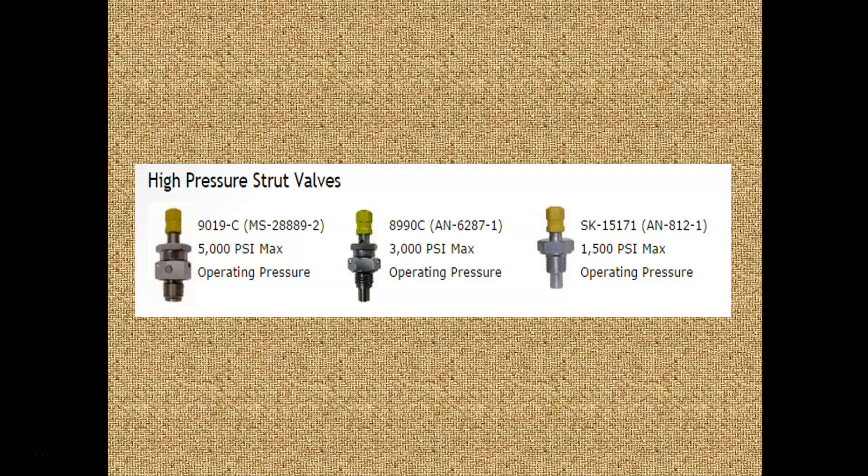Now, the way we fill these accumulators is we'll hook a hose and a cart. We'll have a nitrogen tank, and we'll take that out to the airplane, and we will connect to one of these types of valves. There's three different types of valves that we're going to look at, and these are considered high-pressure strut valves. Really, anything over about 1,500 psi is considered high-pressure. We have a 5,000 psi valve here. These things just vary by part number.